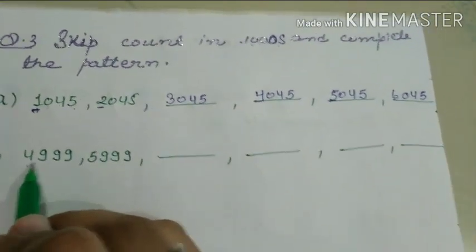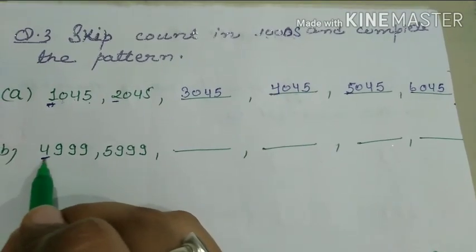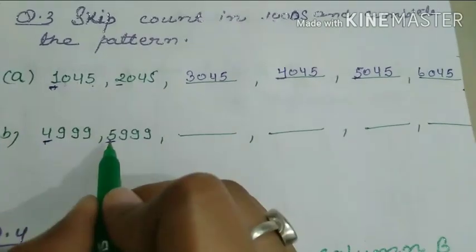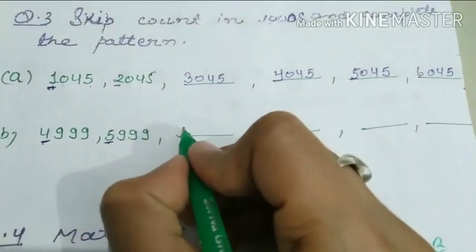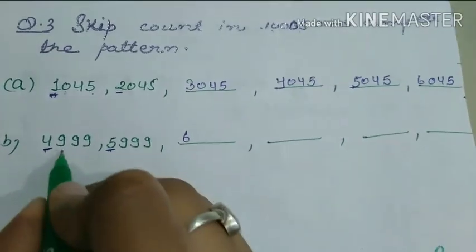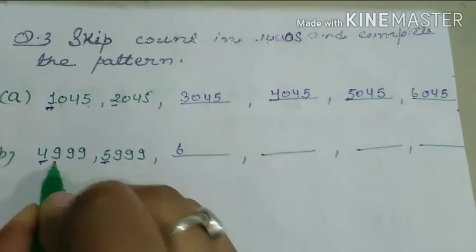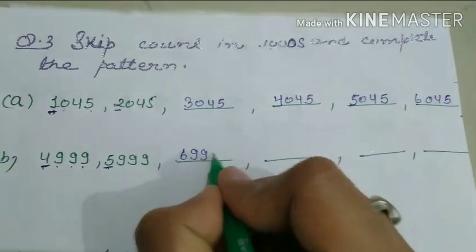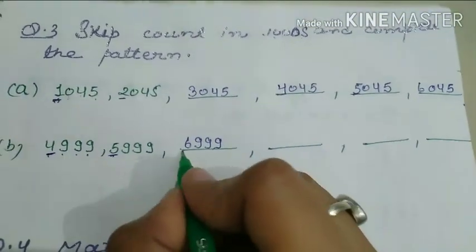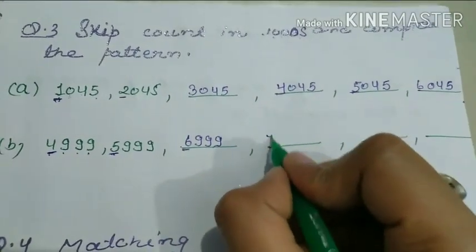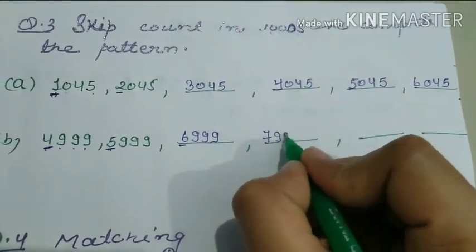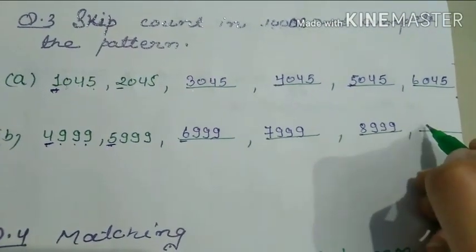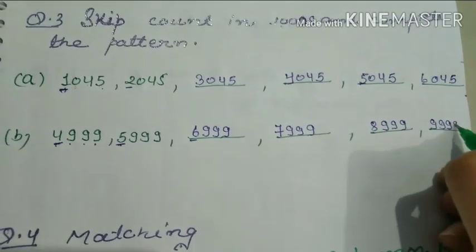For the next thousands skip counting pattern, we change only the thousands digit. Starting from 4, then 5, then 6, then 7, then 8, then 9. The digits at hundreds, tens, and ones place — 999 — remain the same throughout.